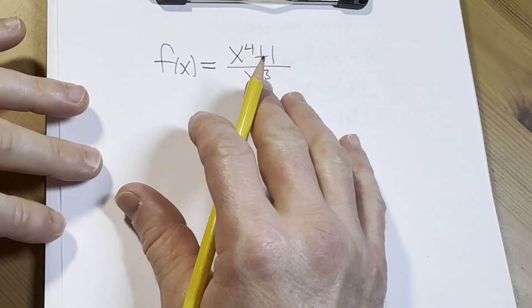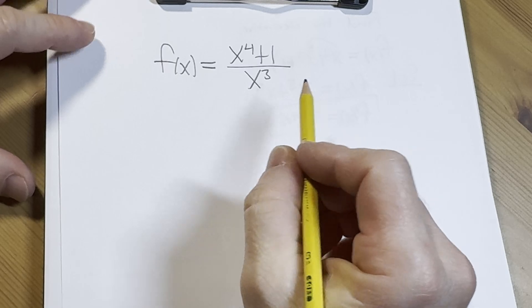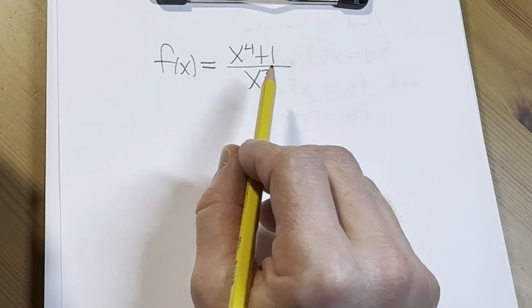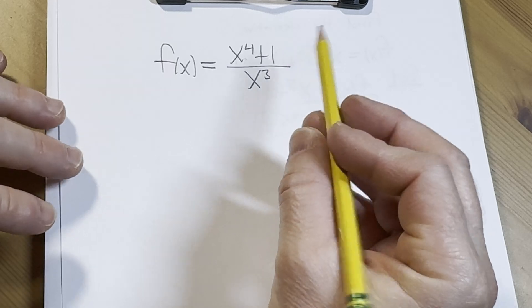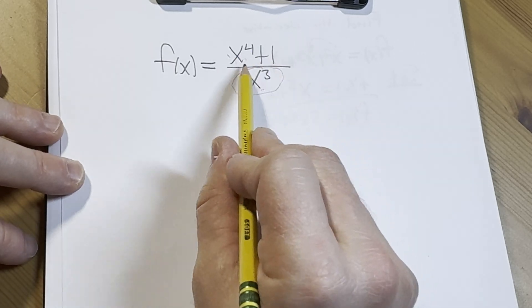Hi, in this video we're going to do an example of finding a derivative. The interesting thing about this example is that even though it's a quotient, we're going to avoid the quotient rule. The reason I know we can do that is whenever you have a monomial, a single term in the denominator, it's usually a good idea to break it up.